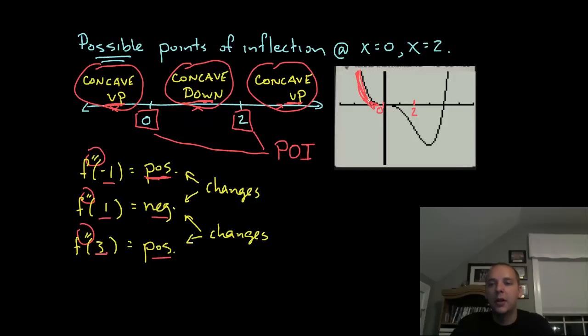Before zero it was concave up and then after zero but before two it was concave down and then after two it looks like it was concave up again. So we were able to determine the concavity without the aid of the graph. So that's pretty nice to be able to do this and we also realized that zero and two are points of inflection where it changes concavity.